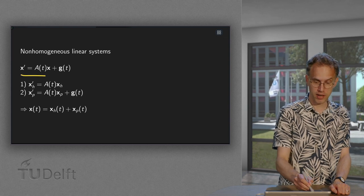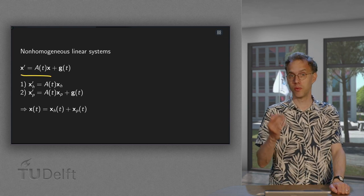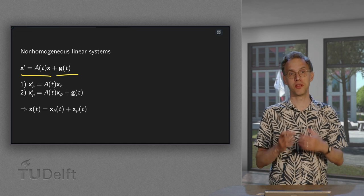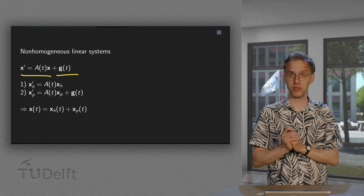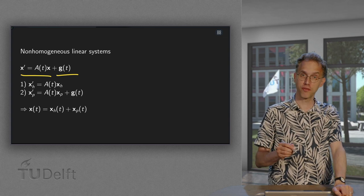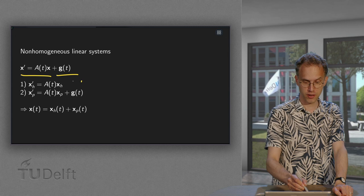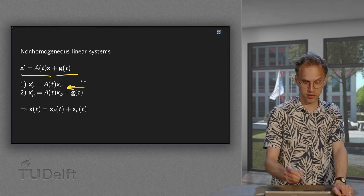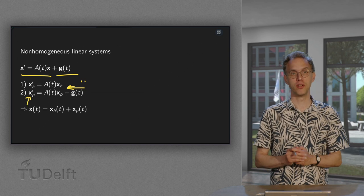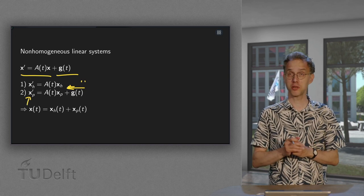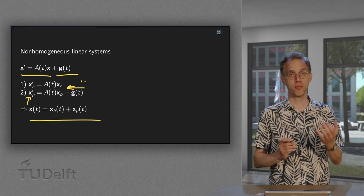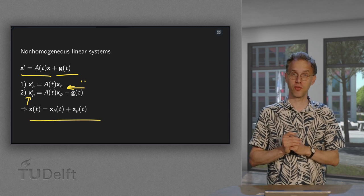We have x prime equals A times x where A may depend on time, plus some g of t because now we are moving on to non-homogeneous systems. Well in principle you can do this as follows. First solve the homogeneous part for your homogeneous solution. Then find some particular solution of the problem x prime equals A times x plus g of t, and then the total solution is the sum of the homogeneous and the particular one.